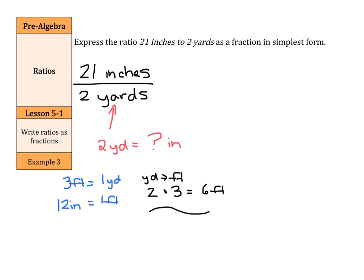Next, if I look to get my feet into inches, I can take my six feet multiply by the twelve inches per foot to get seventy-two inches.